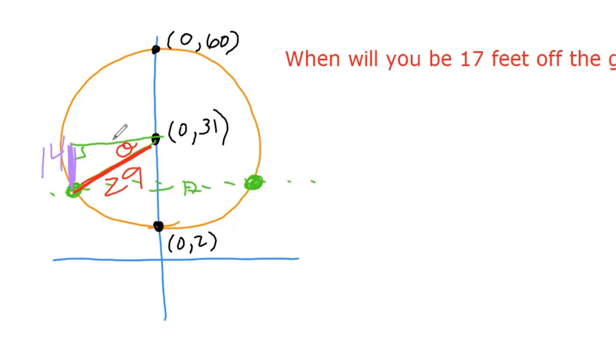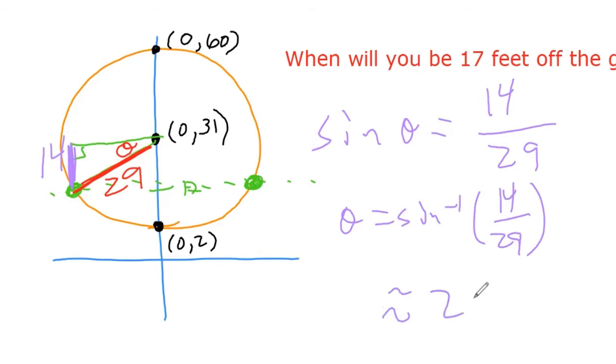It looks like a sine, right? We can go sine of theta and so theta is sine inverse of 14 over 29 which is about 28.87 degrees.